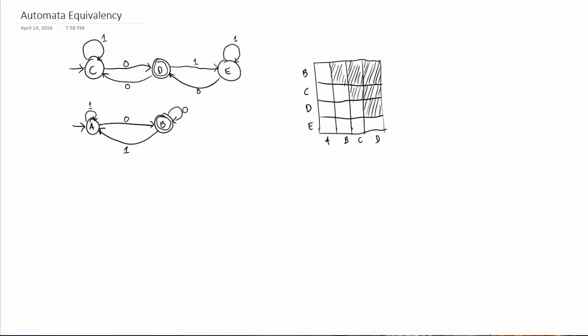This is going to be a bit of a process, but we can stop it early if we find out that the pair of initial states, so here it's A and C, if we find out that these are distinguishable, then we can stop the entire algorithm immediately. So let's get to it.